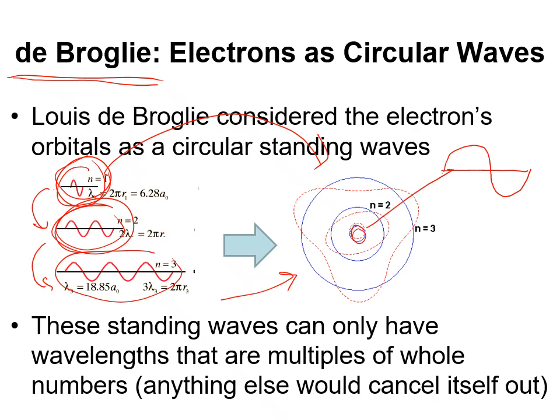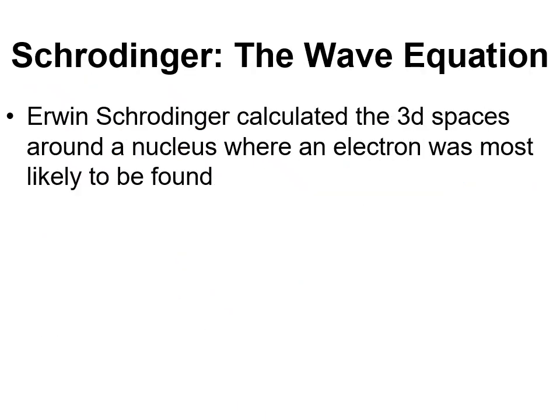These standing waves can only have wavelengths that are multiples of whole numbers, otherwise they would cease to exist. But atoms are three-dimensional, so Schrodinger actually did the work in terms of figuring out what these waves would look like in three dimensions. We're not getting anywhere close to thinking about the math involved in this, but essentially this gives you a wave equation which is a depiction of where the electron is most likely to be found.